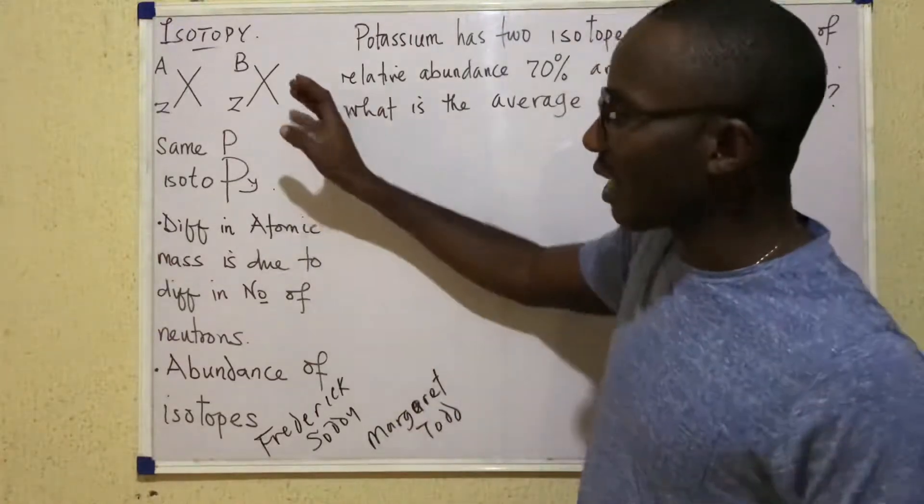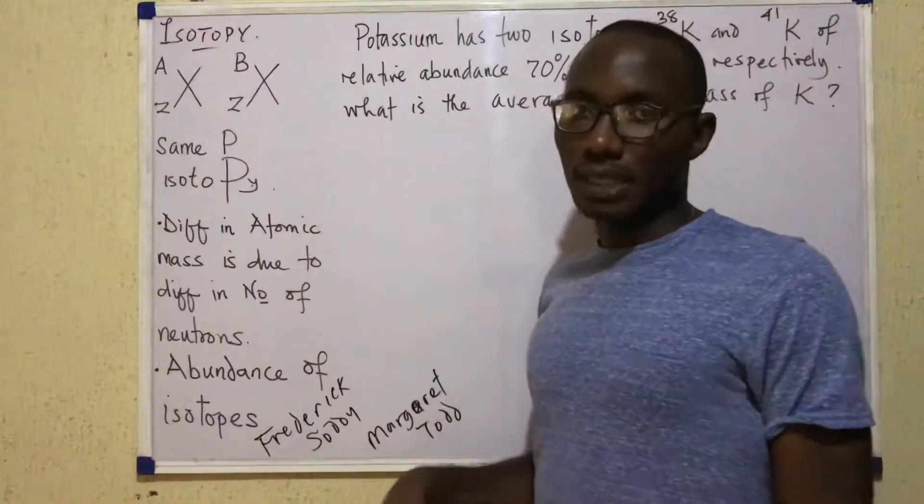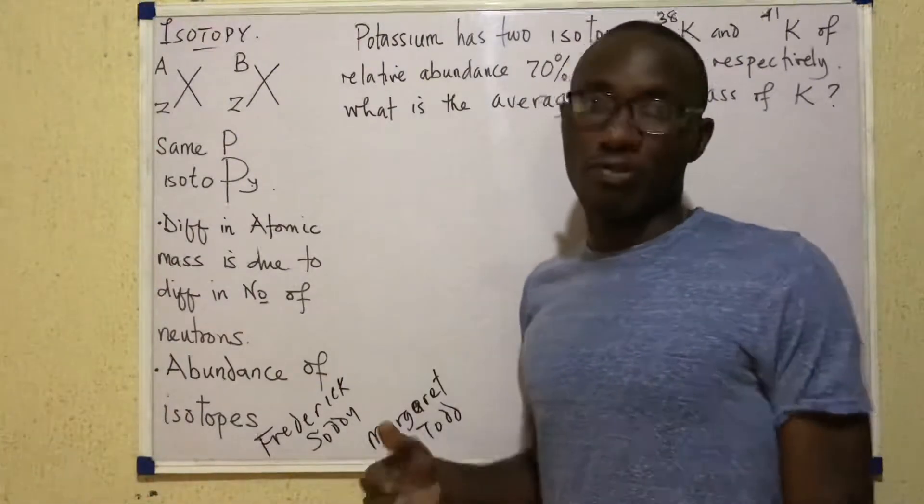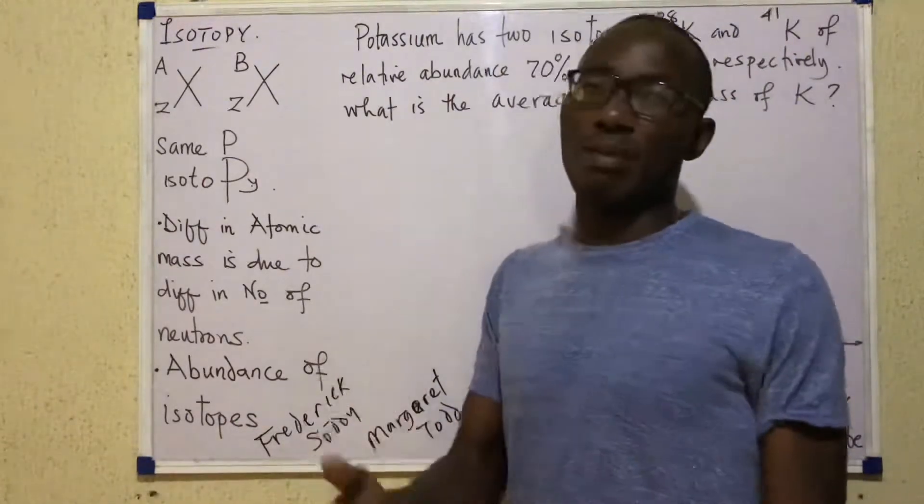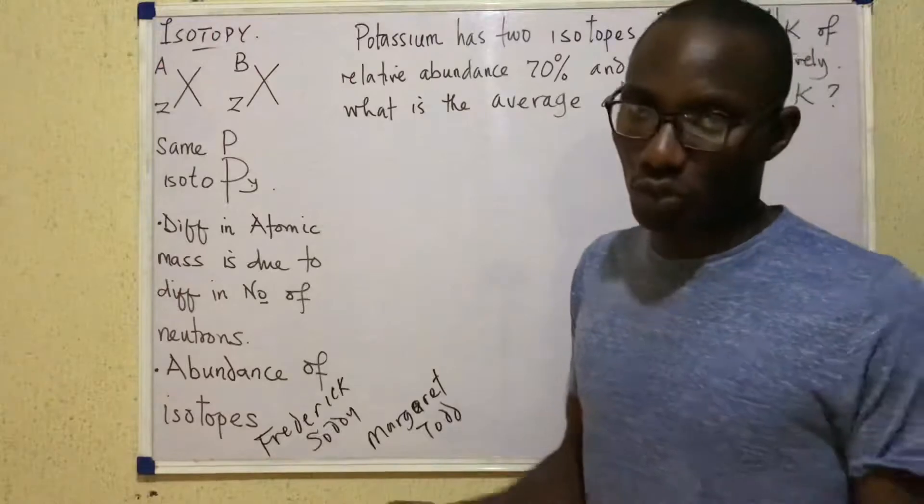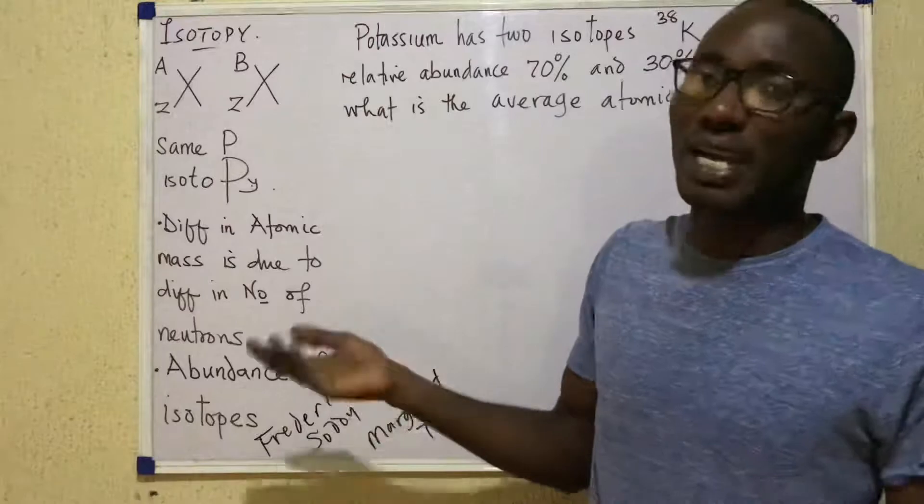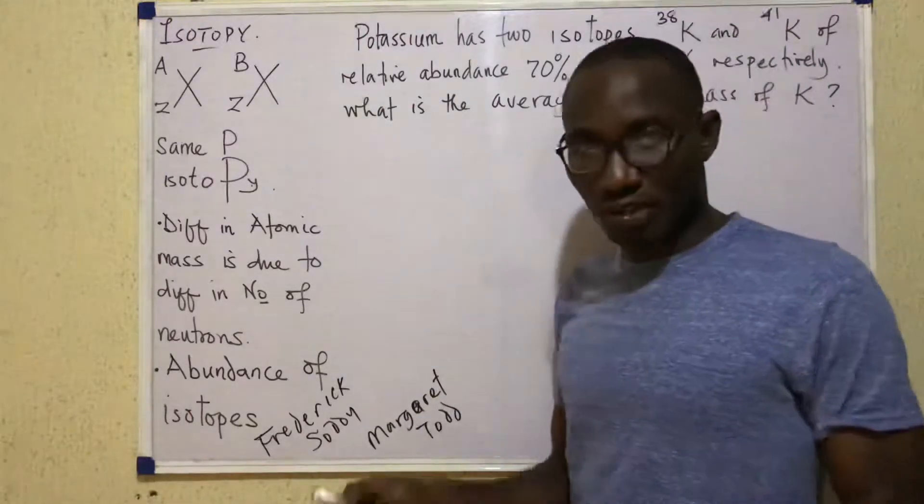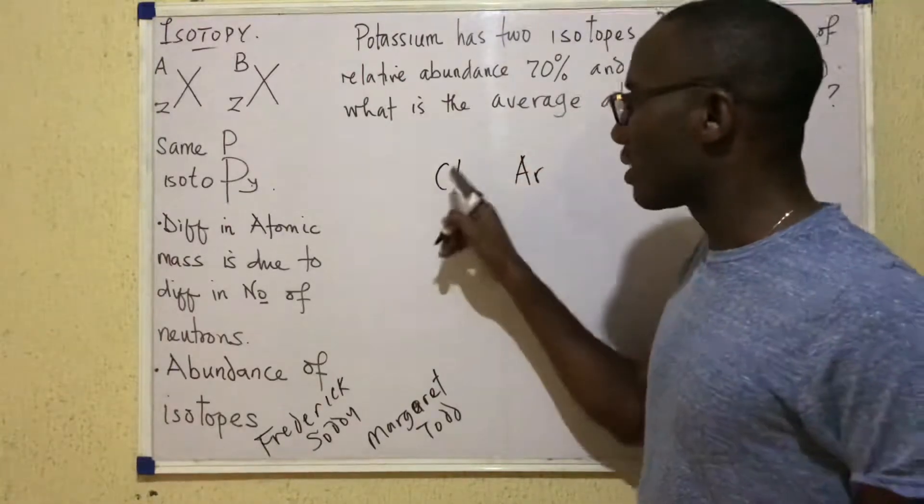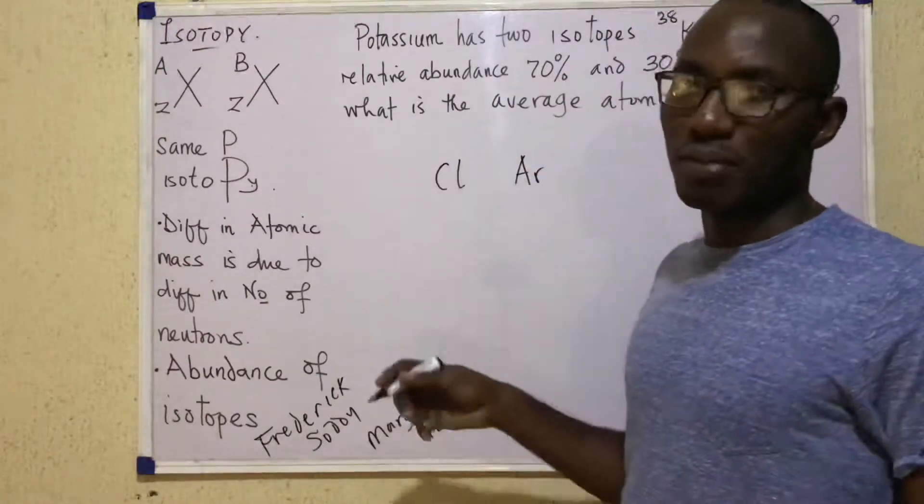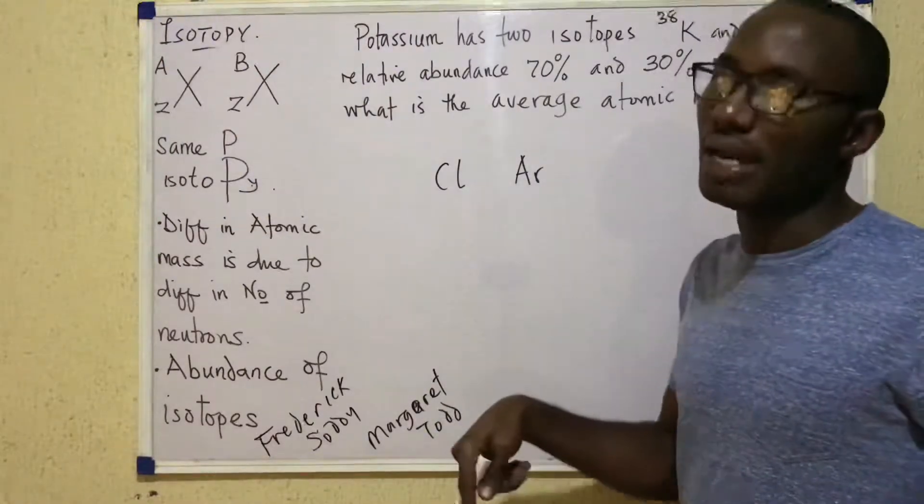That tells us that isotopes are usually atoms of the same element. It means also that in an exam, if you are asked which of the following is an example of isotopy, you must first bear in mind that any case where you have two different symbols can never be isotopy. For example, if I give you chlorine and give you argon, no matter how you try to manipulate the numbers, they cannot be isotopes because isotopes must be atoms of the same element.